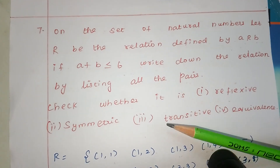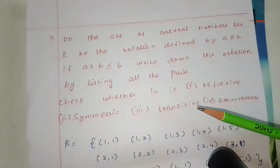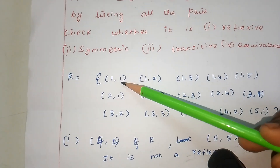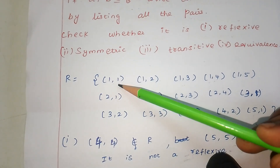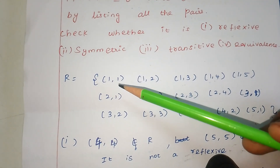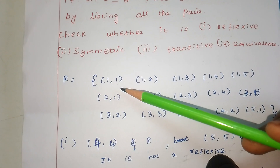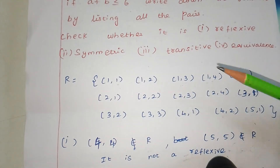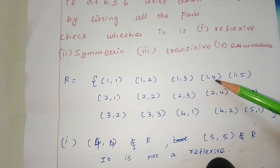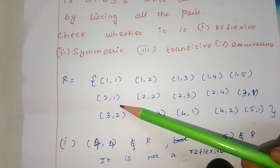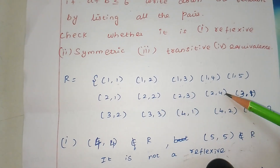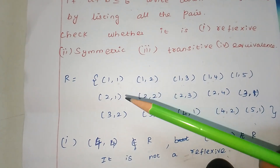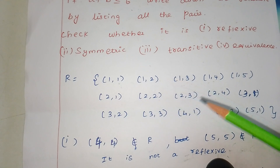We need to list all the pairs. First, (1,1) is valid because 1+1=2, which is less than or equal to 6. So we get pairs (1,1), (1,2), (1,3), (1,4), (1,5) — because 1+5=6. Then (2,1), (2,2), (2,3), (2,4) — because 4+2=6. And in order we also get (2,3), (2,4).